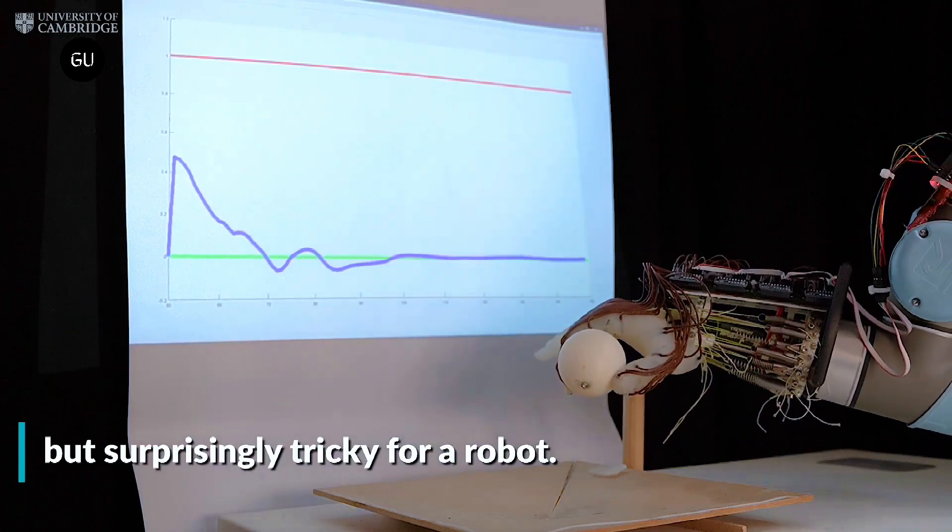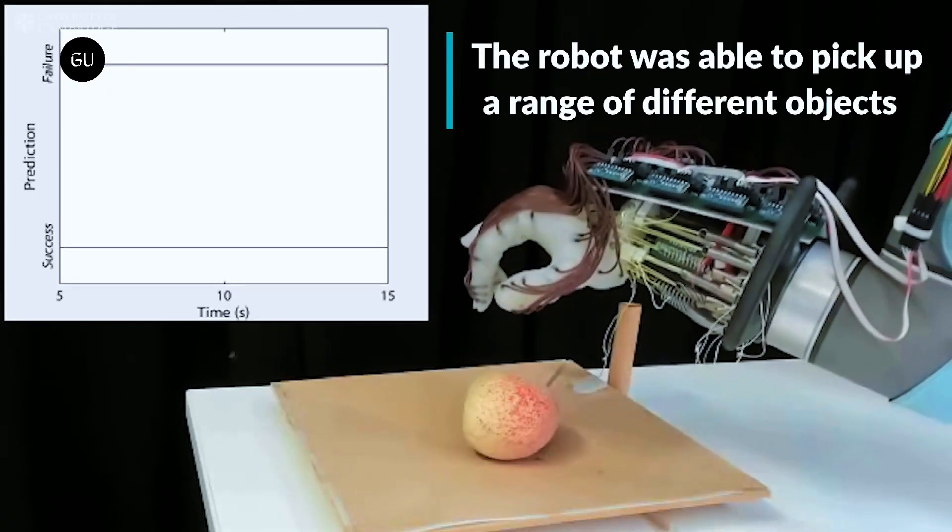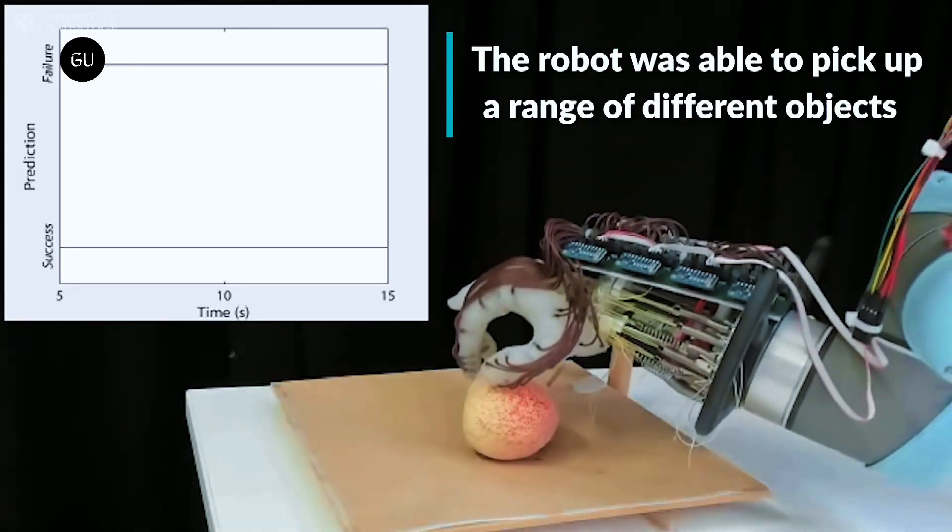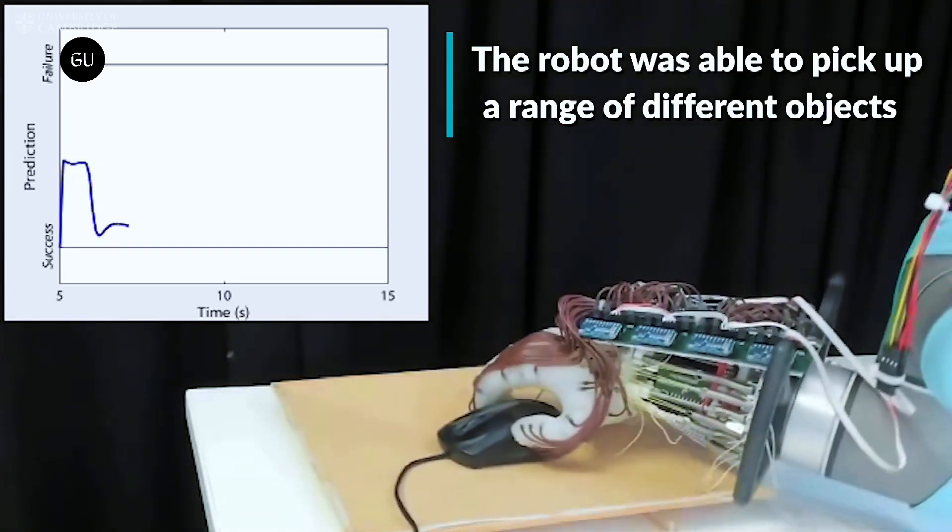The 3D-printed anthropomorphic hand was equipped with tactile sensors to sense what it was touching. The researchers conducted over 1,200 tests to evaluate the hand's ability to grasp objects without dropping them.